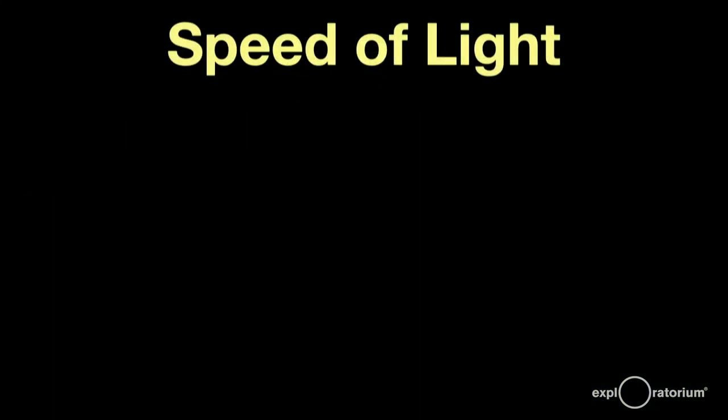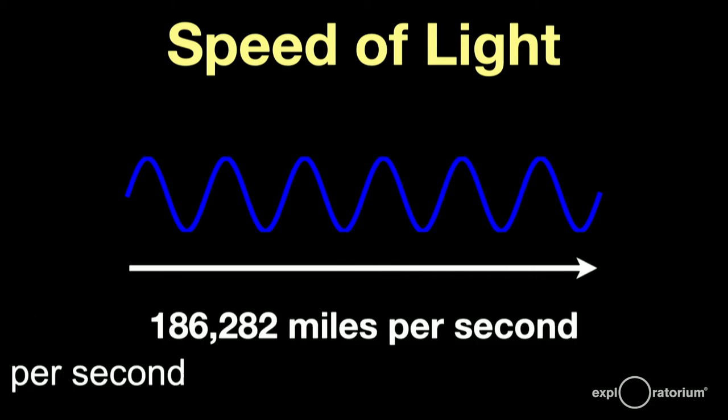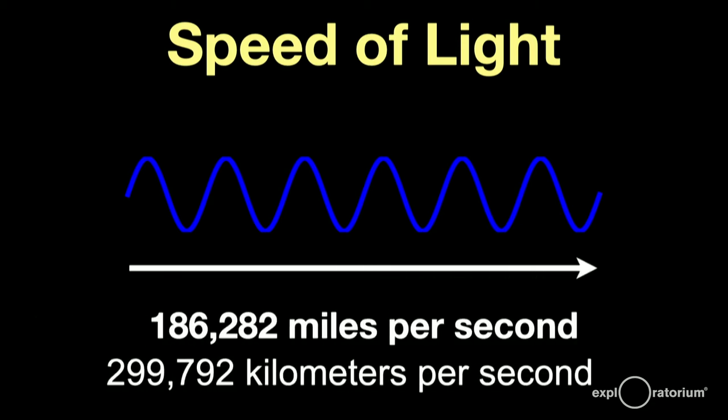Light is an electromagnetic wave, a wave of changing electric and magnetic fields that moves through space at nature's speed limit, 186,282 miles per second, or about 300,000 kilometers per second. Nothing moves faster.